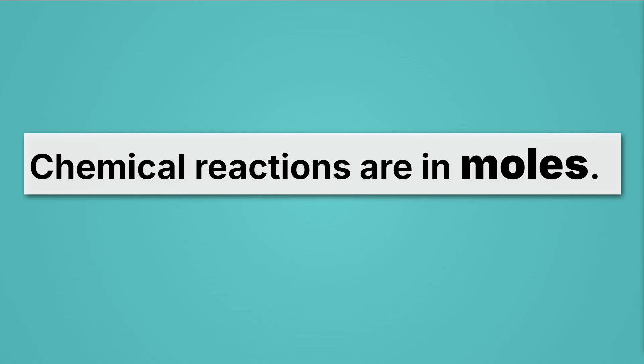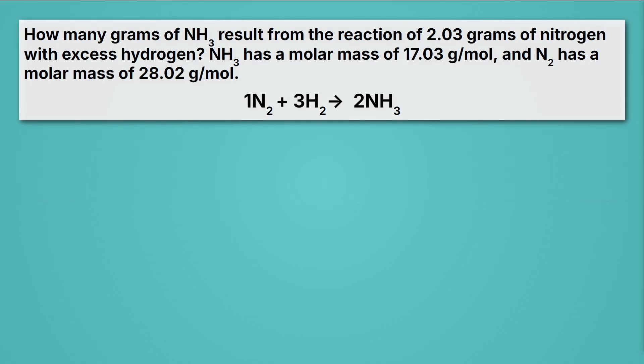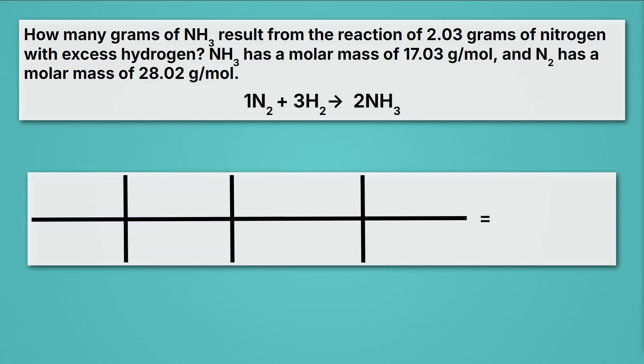Let's take a look at our practice stoichiometry problem. This question says, how many grams of NH3 result from the reaction of 2.03 grams of nitrogen with excess hydrogen? It also tells us that NH3 has a molar mass of 17.03 grams per mole, and nitrogen has a molar mass of 28.02 grams per mole. Let's set up our conversion train track. We know that we're going to be starting with nitrogen. That's the quantity we're given, 2.03 grams of nitrogen. And we want to eventually find out how much ammonia or NH3 we can make.